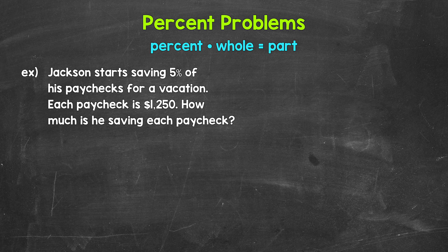where we have, Jackson starts saving 5% of his paychecks for a vacation. Each paycheck is $1,250. How much is he saving each paycheck?